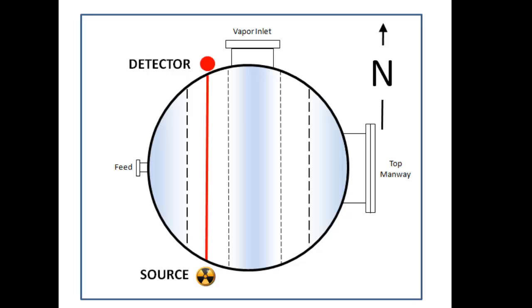In addition, a gamma scan of the center downcomers was also performed by placing a radioactive source and detector on opposite sides of the downcomer. As a result, a density profile of the active areas and the downcomers was gained and could be compared.